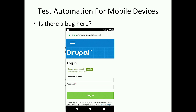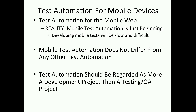Just actually go in and log in on your devices and see what result you'll get — you'll probably get a surprising result. One thing that I do in any kind of test automation is screenshots — tons of screenshots — and examine the screenshots. As I say, test automation is just beginning. In the end, mobile test automation doesn't really differ from any other kind of test automation. Think of test automation more as a development project rather than any kind of testing project.